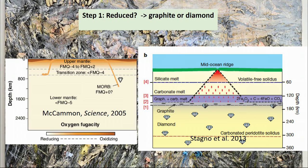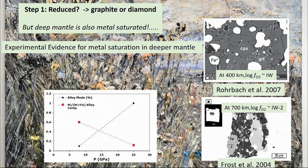But when we consider how reduced the mantle actually is, we realize there are other complications. Experiments show — and perhaps the whole reason we think the mantle at depth is reduced — is that the mantle becomes sufficiently reduced that we begin to precipitate an iron-nickel alloy. In the shallower parts of the upper mantle, this is initially a nickel-rich alloy. As pressure increases and the mantle becomes yet more reduced, more and more iron dissolves into the alloy, increasing the total amount of alloy present.